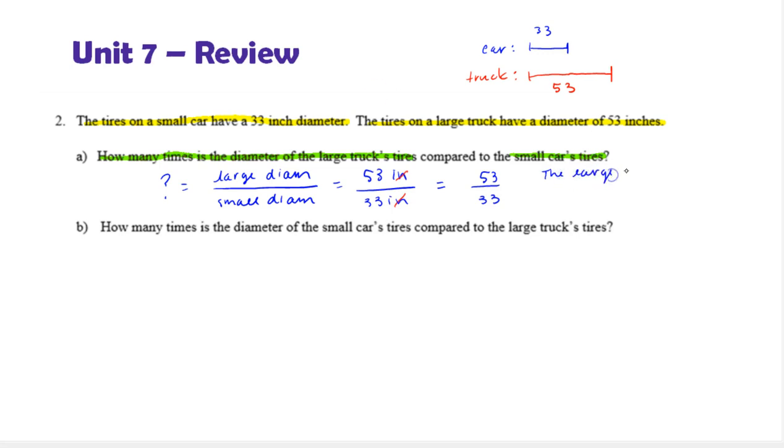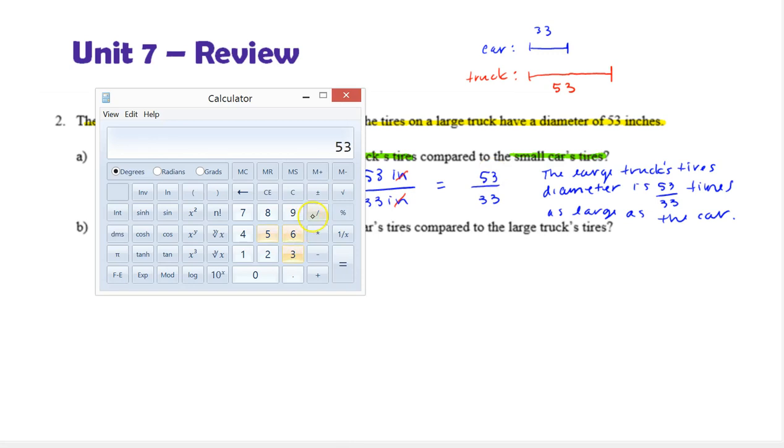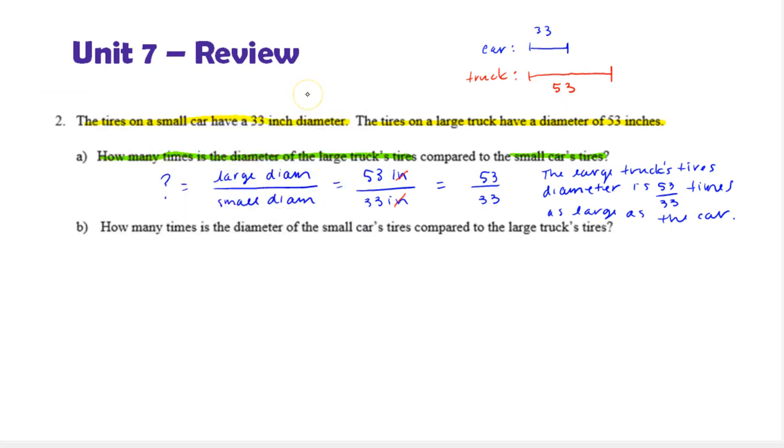So, the large truck's tire's diameter is 53 over 33 times as large. So, notice here, we didn't have a ratio that simplified to a whole number, and typically, in these problems, we'll leave this as a simplified improper fraction. This is actually simplified, they have no common factors. If you want to get a better feel for this, you could actually divide the numbers. Notice it's about 1.6, that means you'd have one whole car diameter length, and then 0.6 of one. And that gives us a good idea, but it's not necessary in this problem.